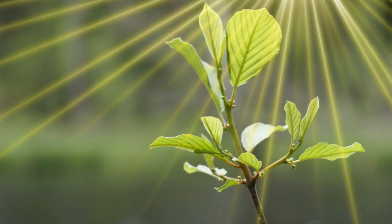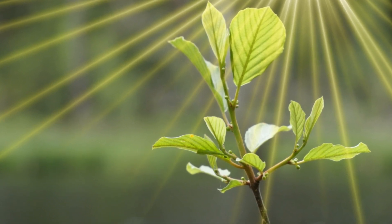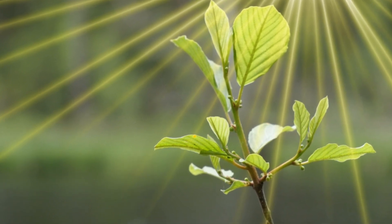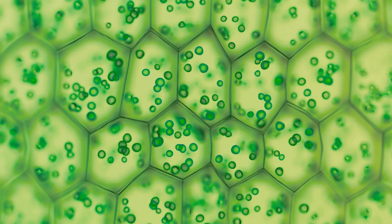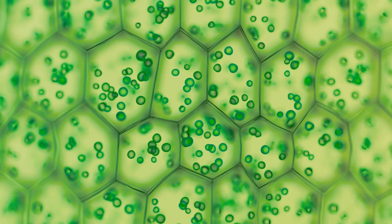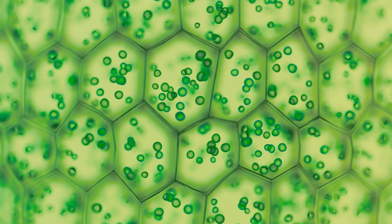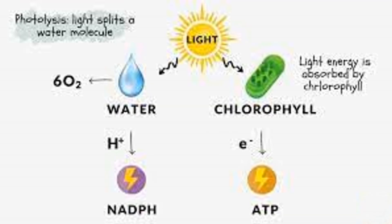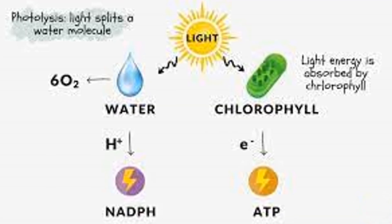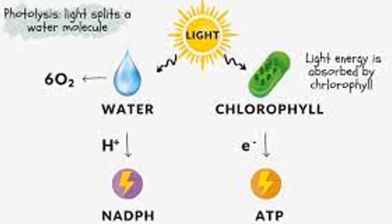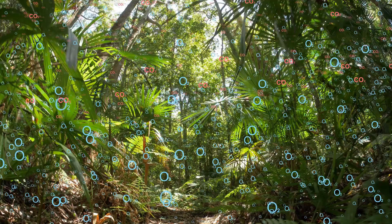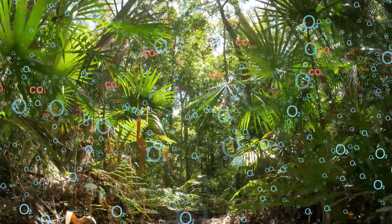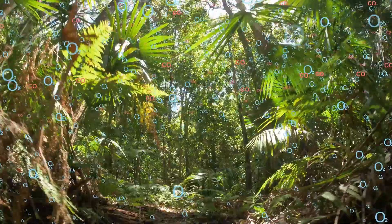The sunlight hits the leaves of the plant, where it is absorbed by a green pigment called chlorophyll. This is usually found in tiny structures called chloroplasts in the leaf cells. The energy from the light then splits water molecules into hydrogen and oxygen. This process is known as photolysis. The oxygen is released into the air — the same oxygen we breathe.